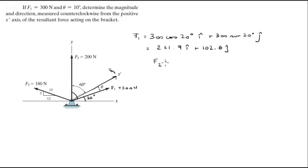F2 is just 200 on the j direction, 200 newtons on the positive j going up.